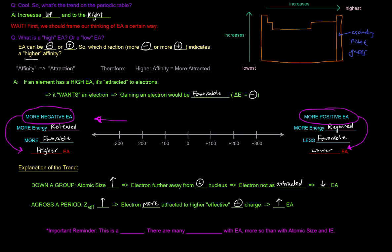An important reminder is that this is a trend — electron affinity increases up and to the right — but there are many exceptions with electron affinity, more so than with atomic size and ionization energy. So just keep that in mind.